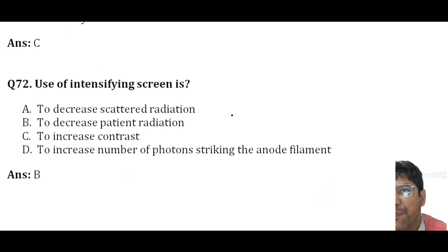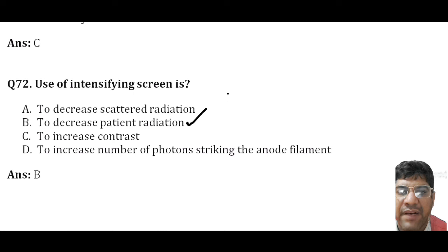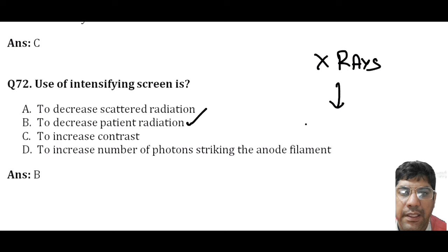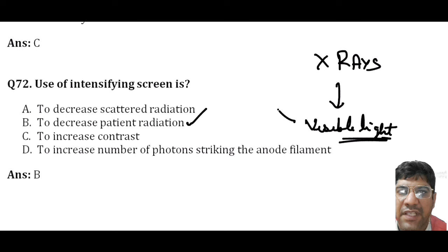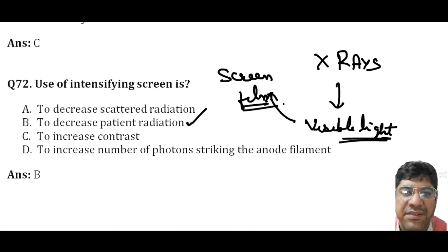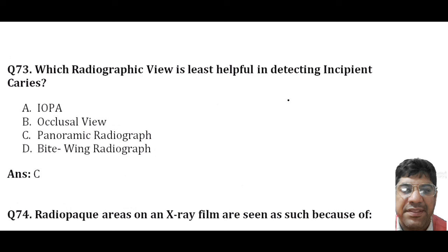The use of intensifying screens is to decrease patient radiation. Intensifying screens are devices that convert x-rays into visible light, and this visible light in turn exposes the screen film. By using intensifying screens, less x-ray radiation is needed to create the image, hence reducing radiation exposure to the patient.